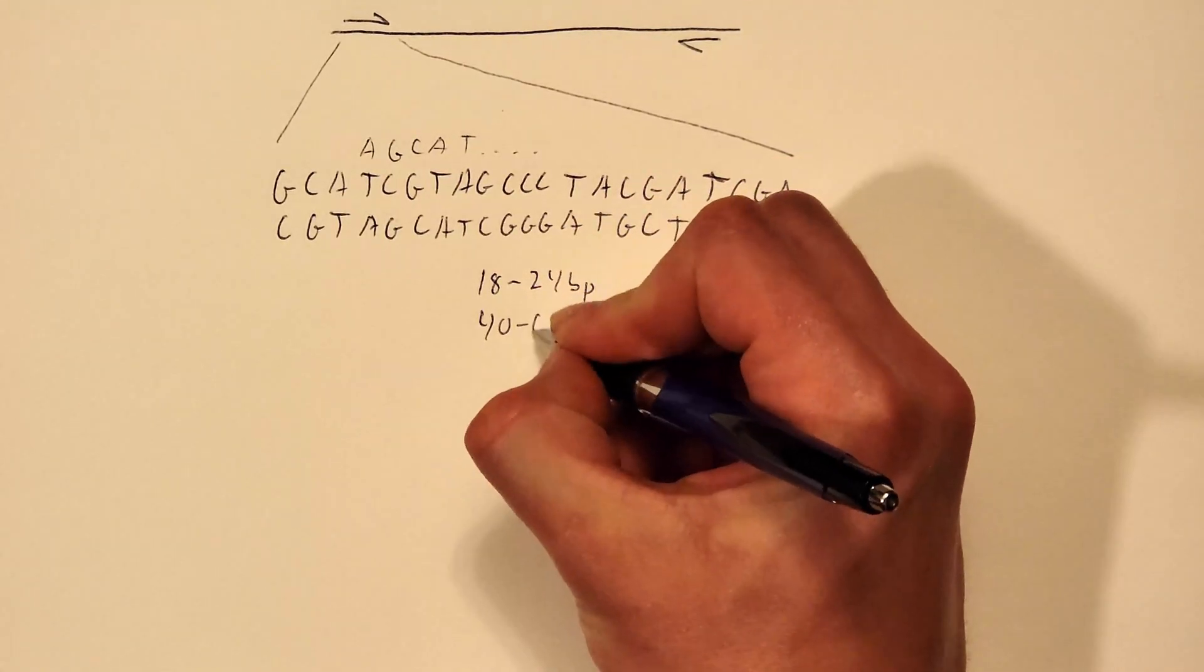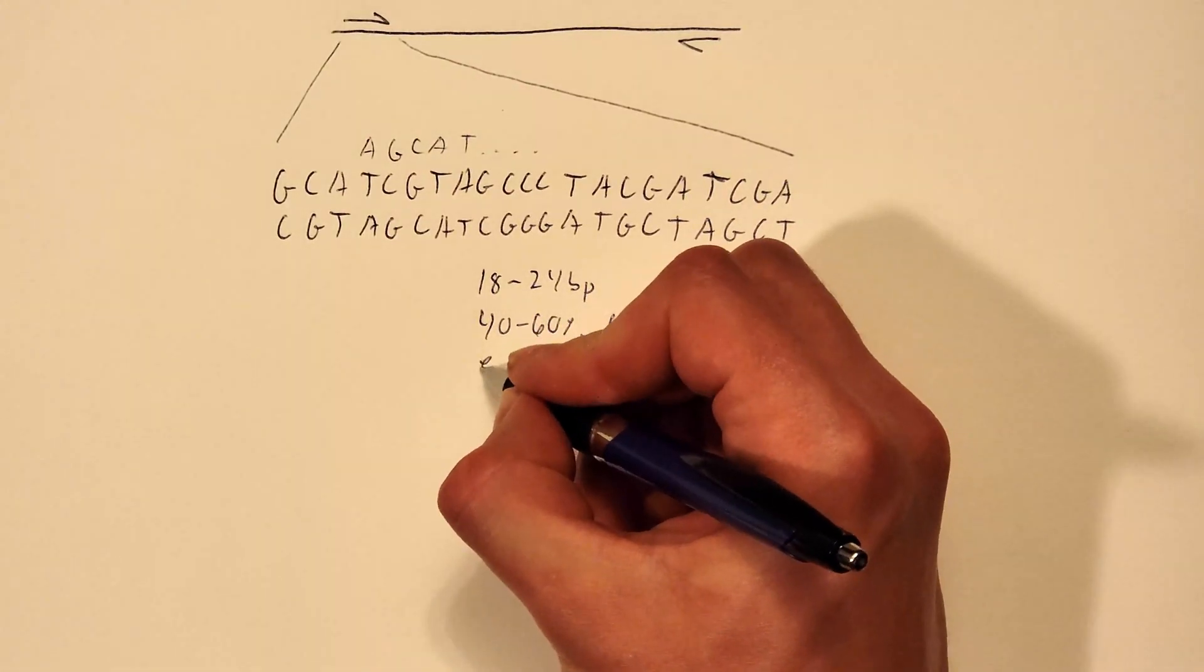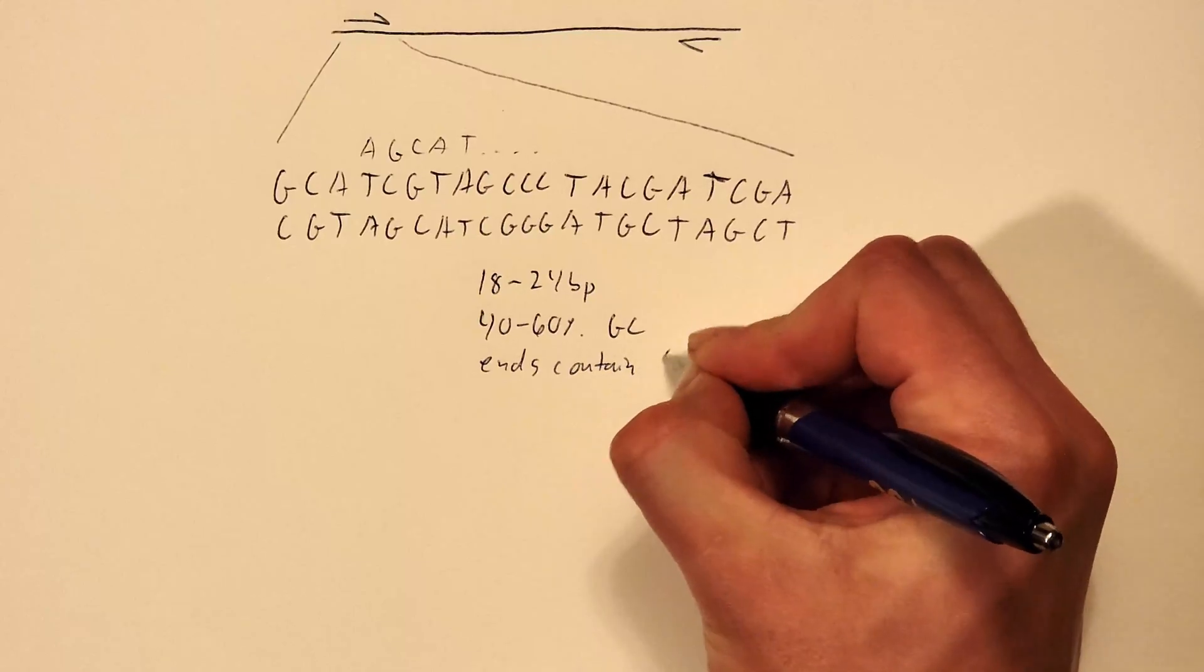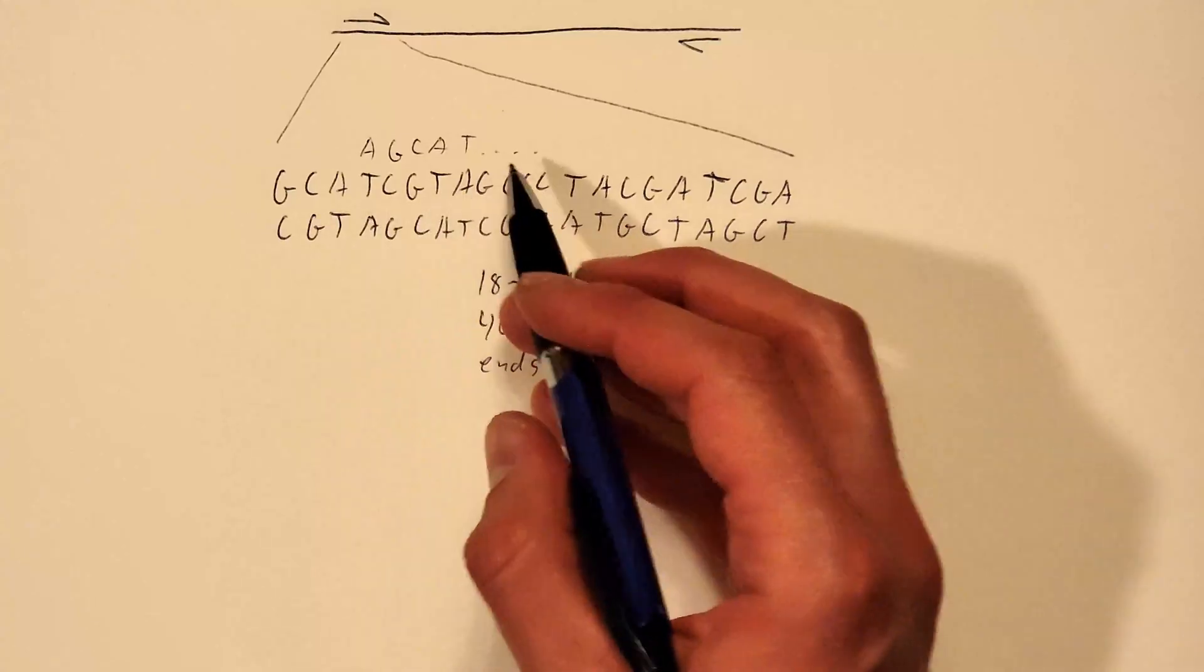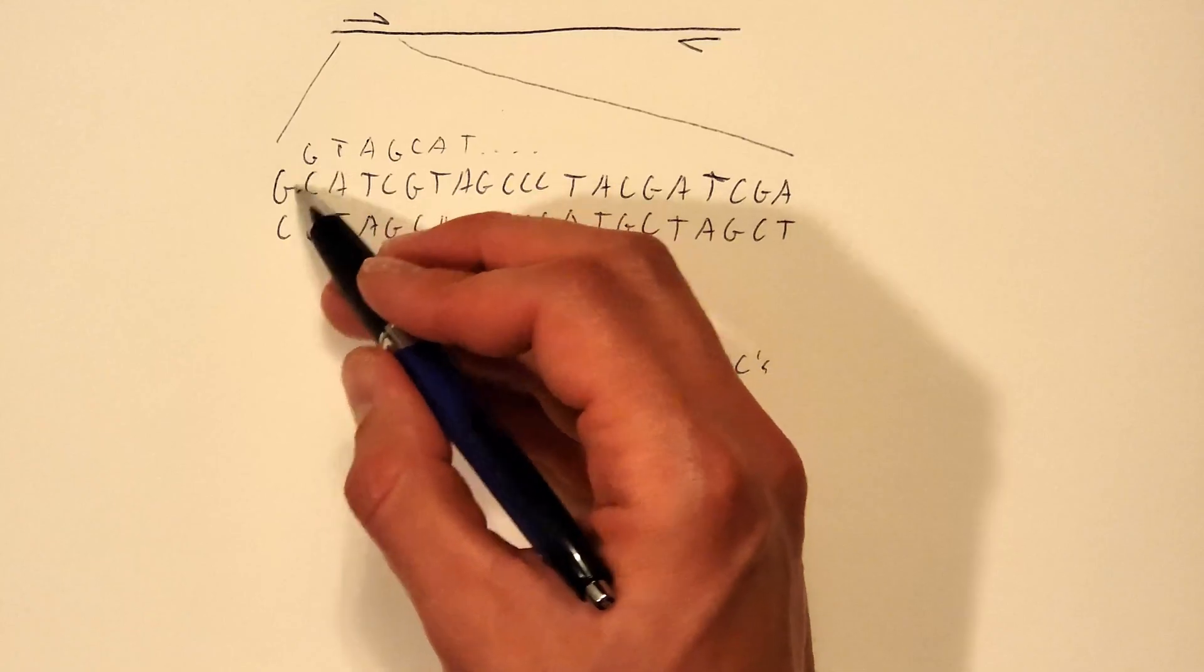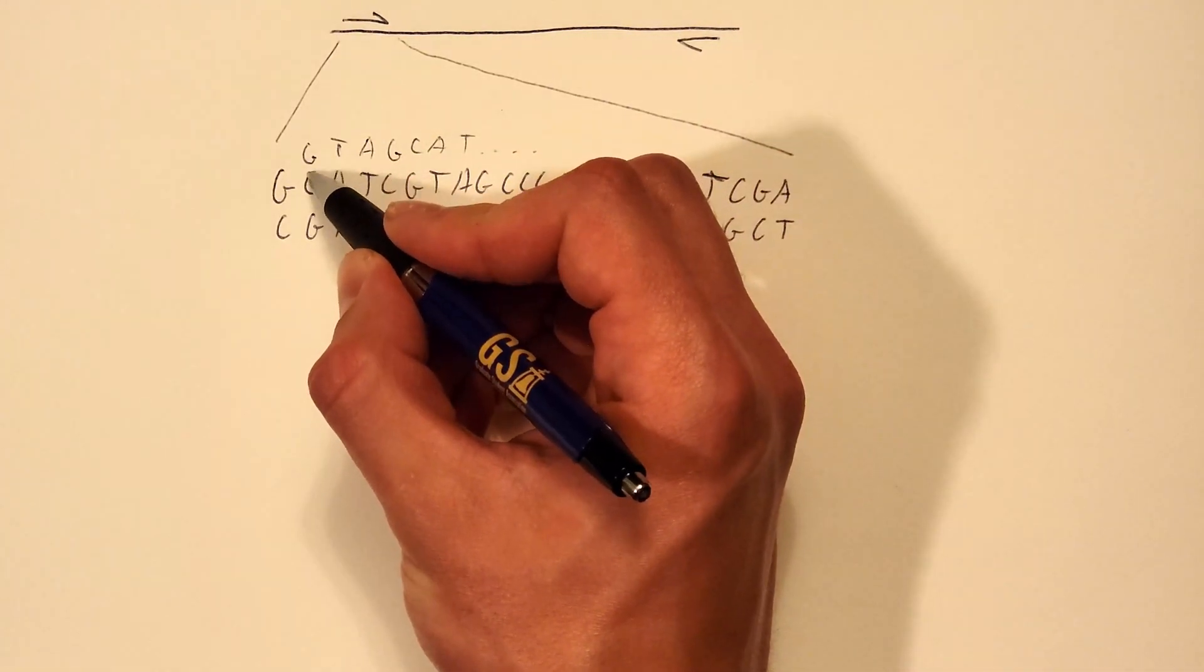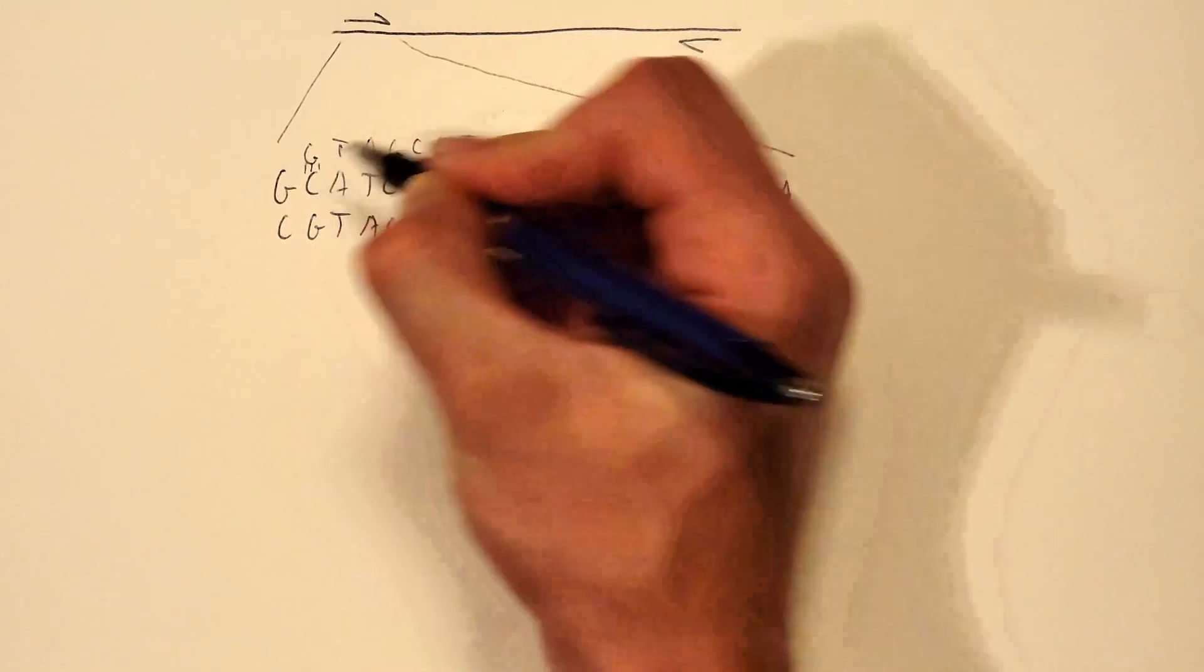You want between 40 and 60 percent GC content. And you want the ends to contain G's and C's. So if you were designing a primer here really you would want to walk it back and have this G sort of tagged at the end.